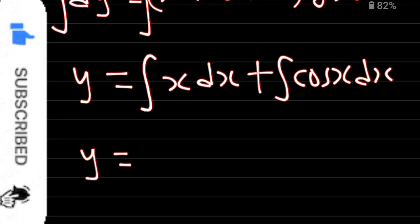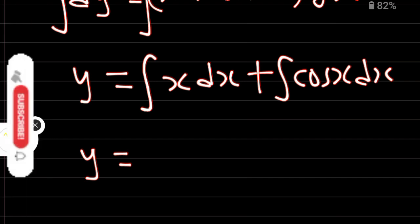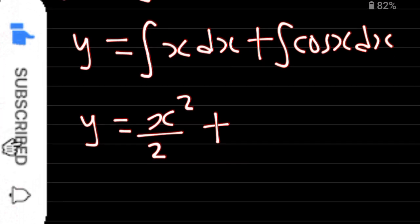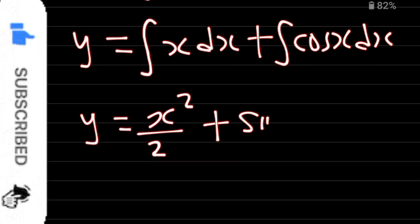Let's integrate x with respect to x. We will increase the power of x by 1 and divide by the new power, which is going to be x squared over 2. Then plus integrate cos x, you are going to get sin x, and then plus c, our arbitrary constant.